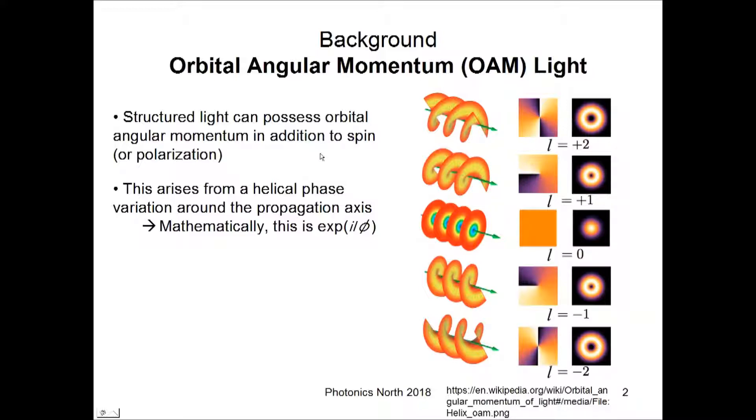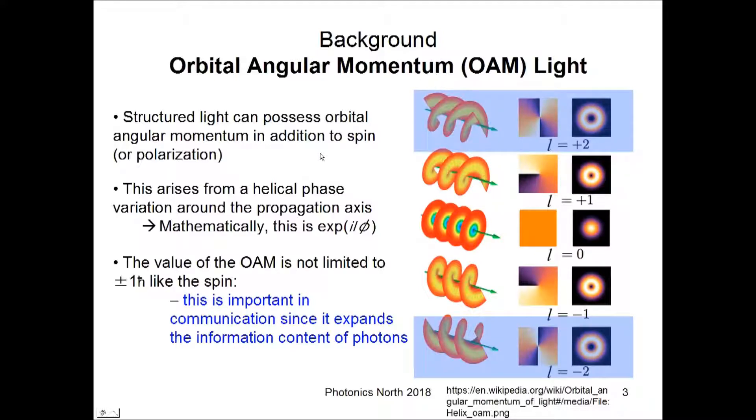So, why is this particularly interesting? The most important part of this is that the spin angular momentum can only take values of plus or minus one h-bar, but the OAM can take any integer value, which means that this greatly expands the information content that a photon can hold, which is of considerable interest in communication.